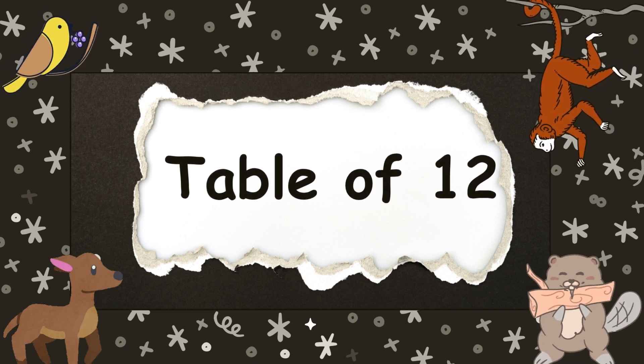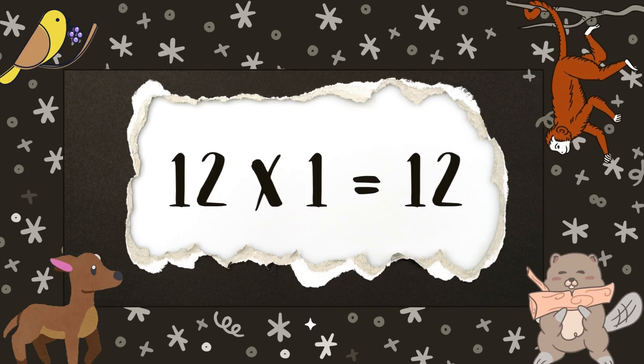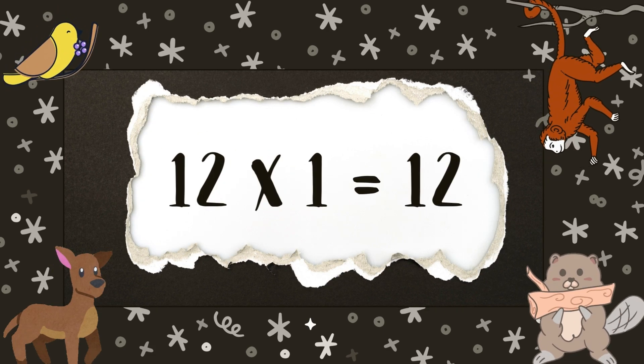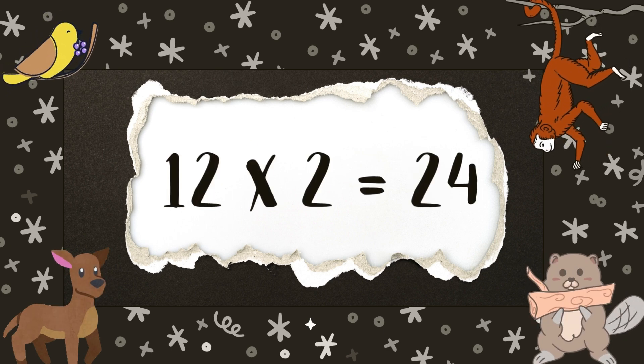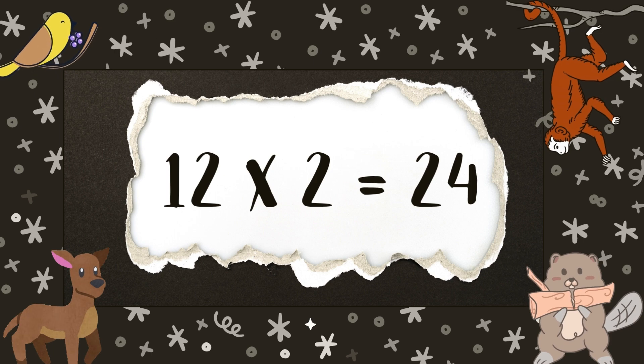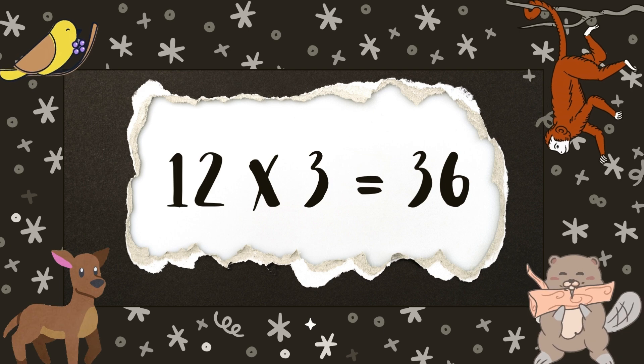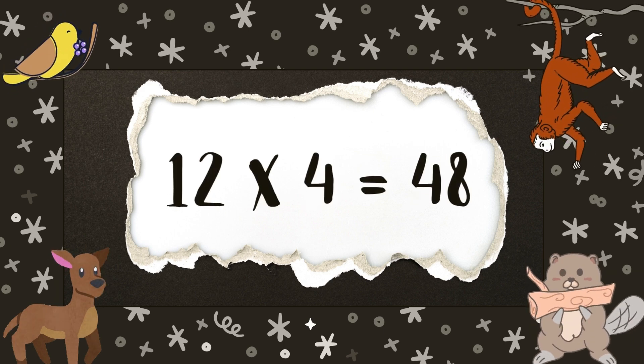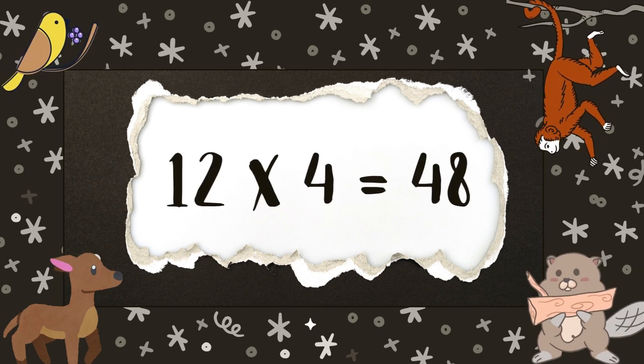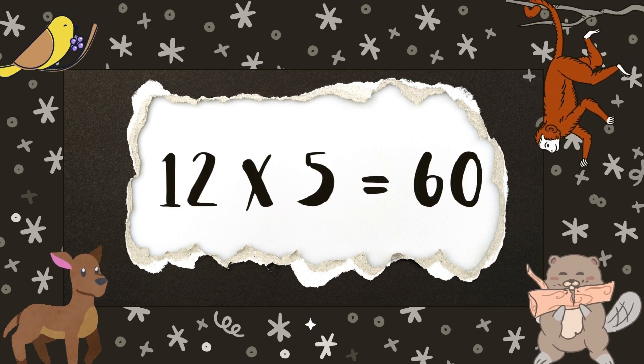Let's learn table of 12. 12 1s are 12, 12 2s are 24, 12 3s are 36, 12 4s are 48, 12 5s are 60.